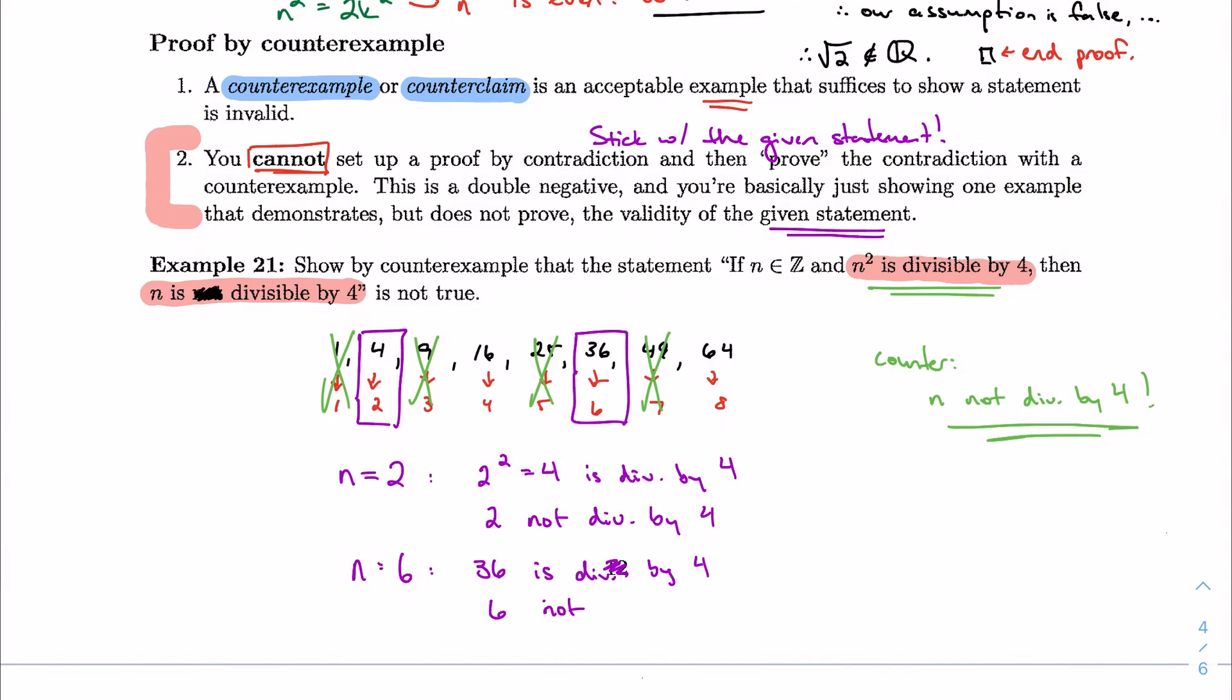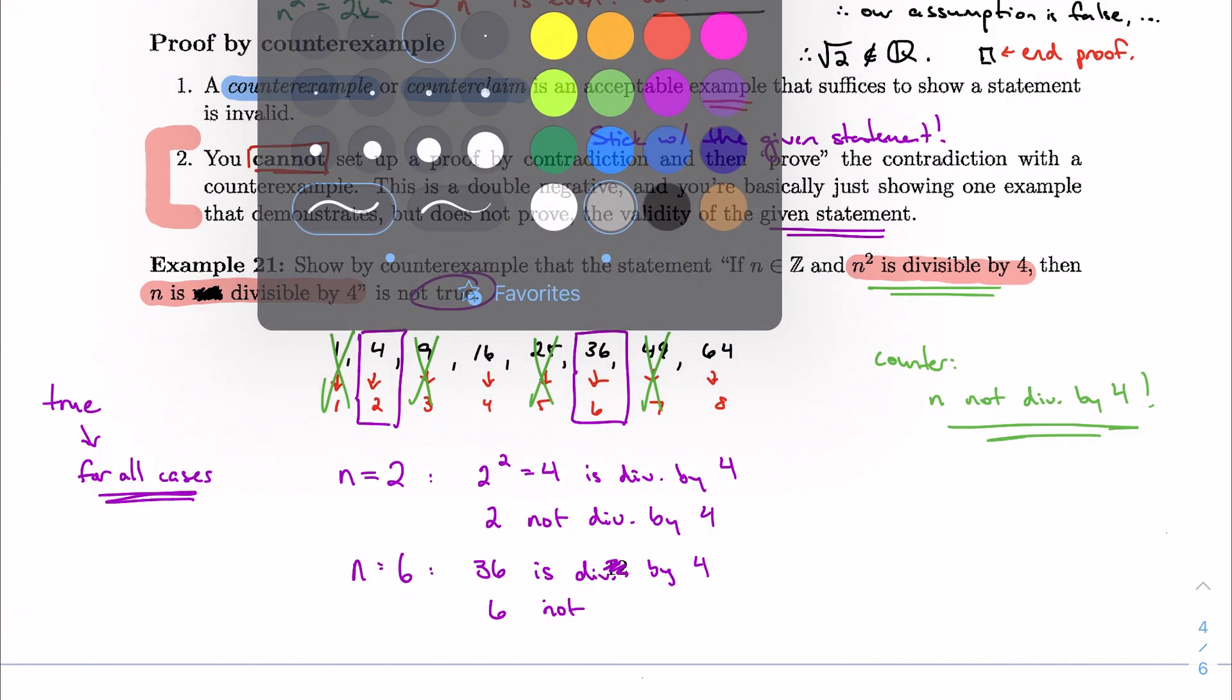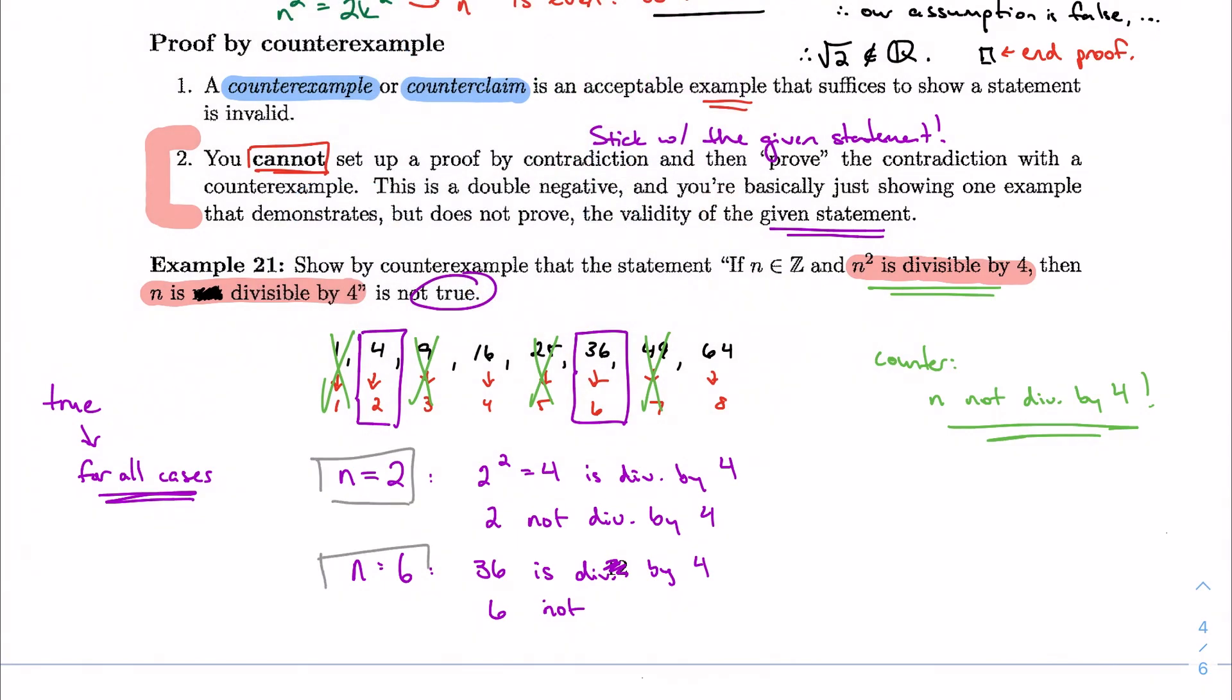So, and that's what we're doing with the counterexample, is when we're saying that something is true, we're saying it's true for all cases. So we have shown that it is not true for all cases, it's only true for like every other case. And that would be a counterexample. We're looking for just one example of something that disproves the statement.